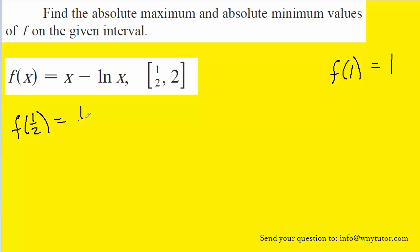f of 1 half is going to have 1 half minus the natural log of 1 half. If you were allowed the use of a calculator, you would see that this is approximately equal to 1.19. And next, we will calculate f of 2, which will equal 2 minus the natural log of 2, which a calculator shows as being roughly 1.31. So we'll summarize those results on the side.